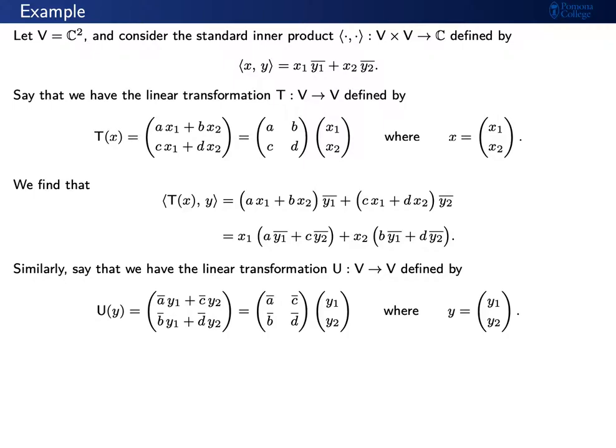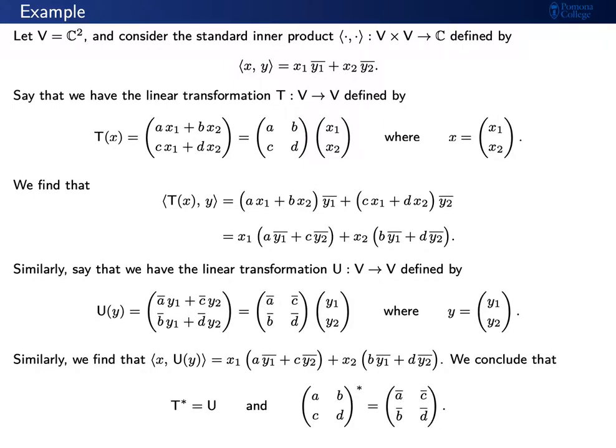Similarly, let's say that we have a linear transformation u from v to v, defined as you see here on your screen. u comes about by multiplication by the matrix with entries a conjugate, c conjugate, b conjugate, d conjugate. Again, we can consider the inner product of x and u of y, and notice that we can write this as x1 times something plus x2 times something. Putting all of this together, we see that the adjoint of t is what we're calling our linear transformation u. The idea is that we can write everything in terms of x1 and x2, and seeing what's left over allows us to figure out what the adjoint is.